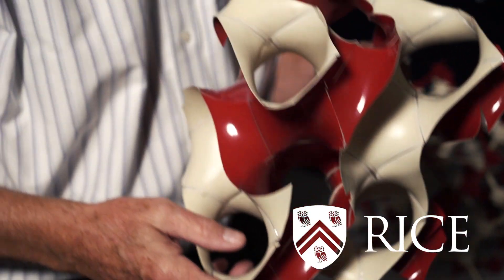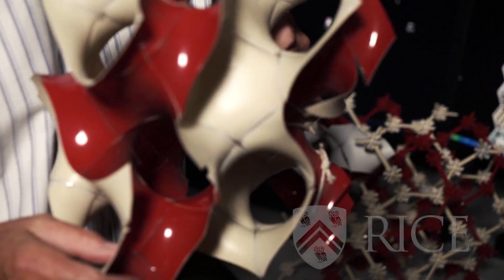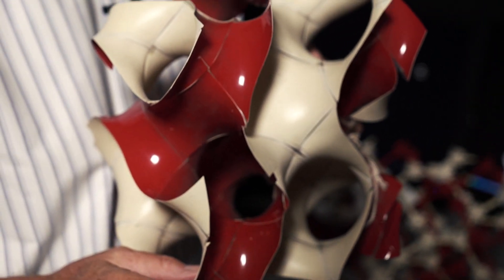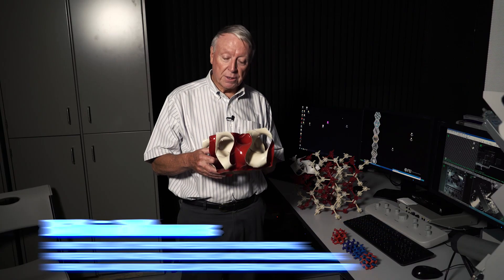I'm holding a model here of a gyroid. A gyroid is a minimal surface. This one is triply periodic and was discovered by a mathematician named Alan Schoen.